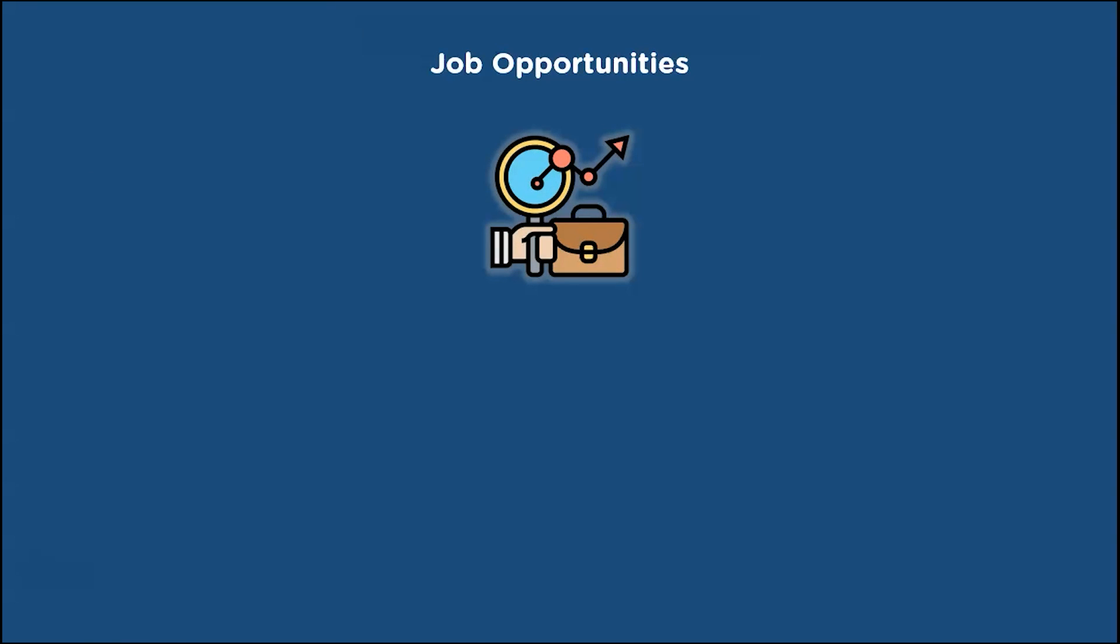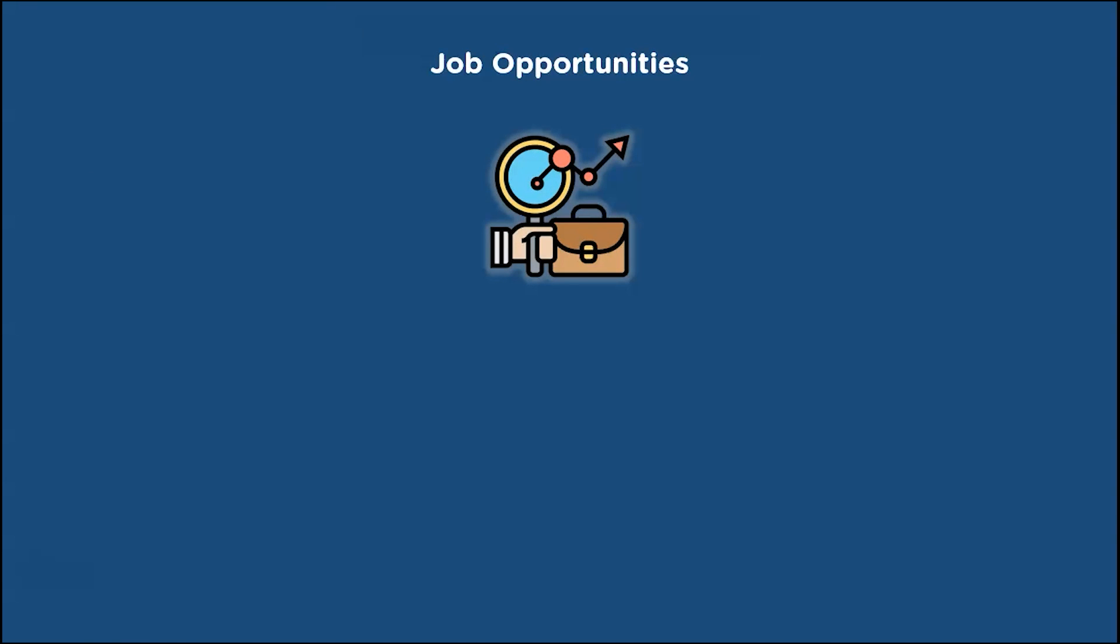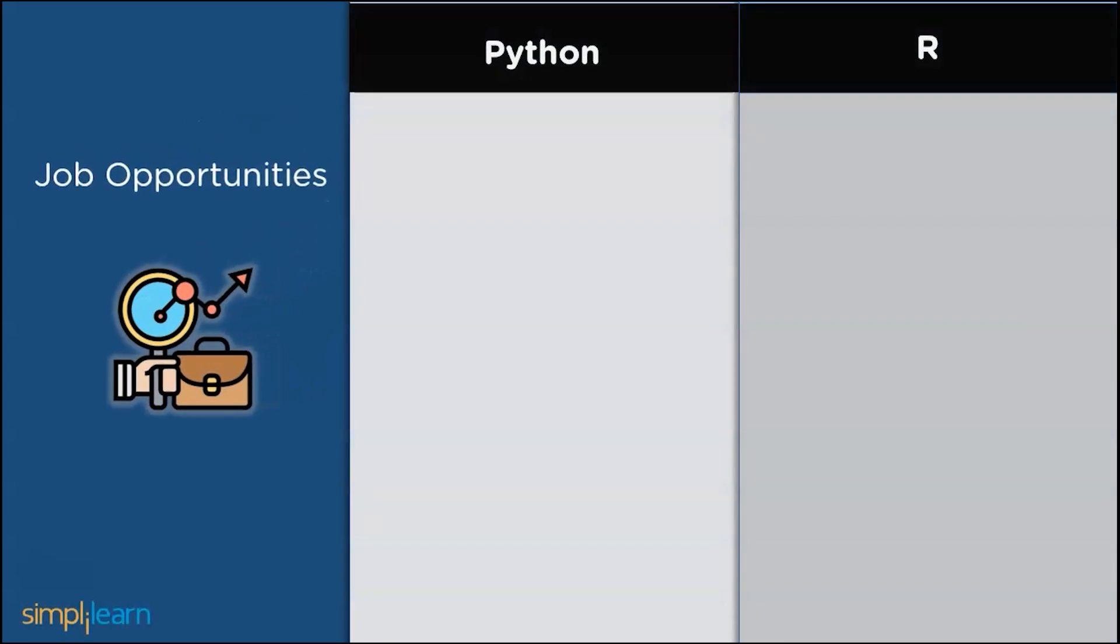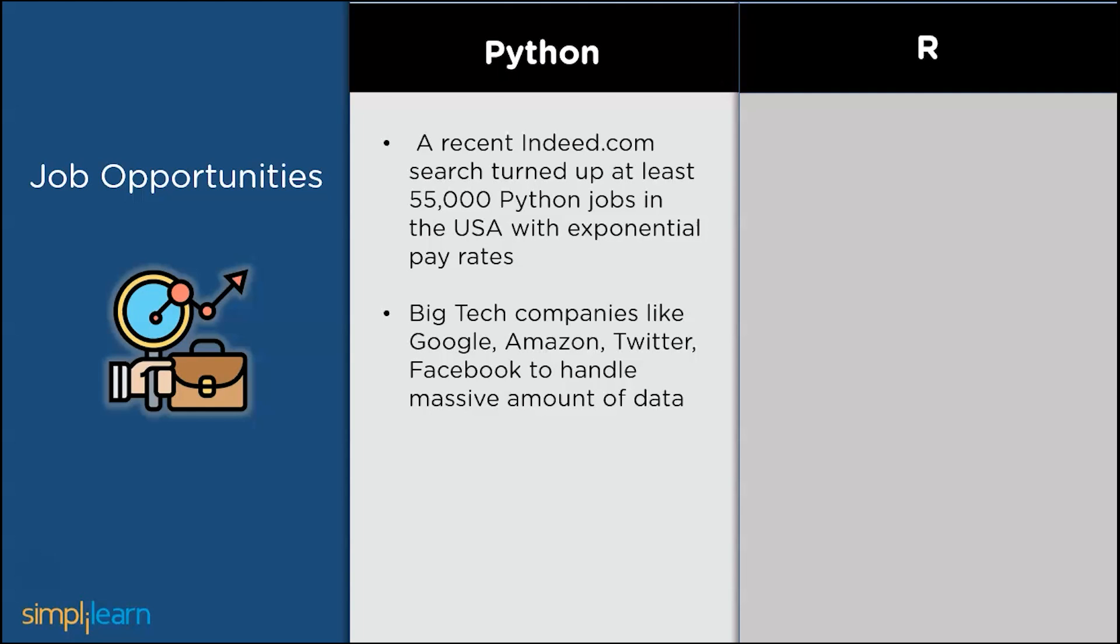Next is job opportunities in Python and R. A recent survey from indeed.com predicts that at least 55,000 Python jobs in the USA with exponential pay rates are available. Big tech companies like Google, Amazon, Twitter, and Facebook require Python developers to handle massive amounts of data. Positions provided for Python developers are software engineer, data analyst, data scientist, and many more.